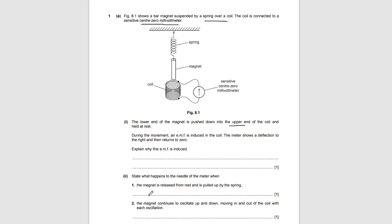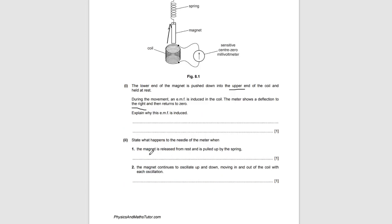It then says: state what happens to the needle of the meter when the magnet is released from rest and pulled up. Remember, pushing it down caused a deflection to the right, so pulling it back up means the deflection will be to the left — that's the outward motion. The magnet continues to oscillate up and down, moving in and out of the coil, so it's going to alternate from right to left, right to left, because you are repeatedly putting it in and pulling it back up.